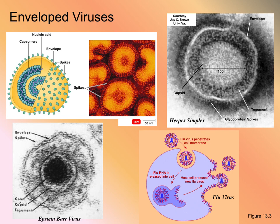Here are some pictures of enveloped viruses. In the top left, that's a flu virus. We've got the herpes simplex virus and Epstein-Barr virus. Epstein-Barr virus is associated with mononucleosis. Down in the bottom right, we have a picture of a flu virus.